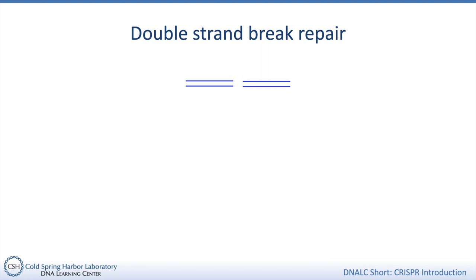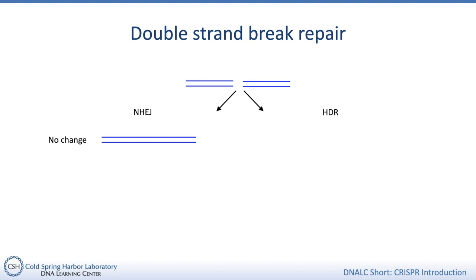Double-strand breaks are dangerous for cells because the ends of the DNA can be damaged or can fuse with other DNA, so a cell will quickly try to repair this break. There are two main ways a cell can repair a double-strand break. One is called non-homologous end joining, NHEJ, and the other is homology directed repair, HDR. These are both complicated processes, so for the sake of time I'll simplify them. In NHEJ, the cell sticks the two ends of broken DNA back together. This is usually an imperfect process, so sometimes extra nucleotides get included, leading to an insertion, or nucleotides get removed, leading to a deletion.